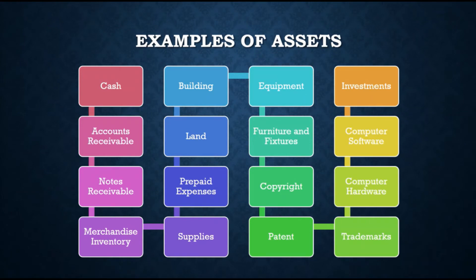Assets can be current or non-current, and tangible or intangible. An asset is current if it can be realized — collected, sold, or used up within one year from the year-end date. Examples are cash, accounts receivable, inventory, and prepaid expense. Non-current assets are those with more than one year, such as PPE (property, plant and equipment), intangibles, and long-term investments. Tangible assets are those that can be physically touched — buildings, equipment, furniture and fixtures. Intangible assets have no physical substance, such as copyright, patent, and trademarks.